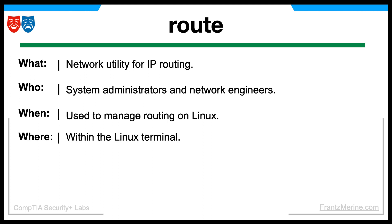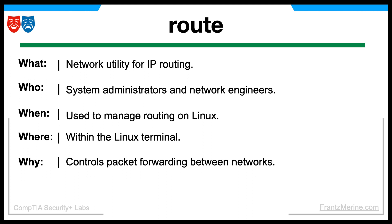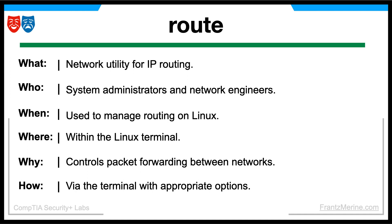The Route command is executed within the Linux terminal or shell, and its effects are applied to the local system's IP routing table. The command is used to manage the routing table, which is essential for determining the path that network packets take from their source to their destination. It helps in controlling the flow of network traffic and ensuring proper communication between devices on a network. To use the Route command, open a terminal in Linux and type Route, followed by specific options and arguments to perform various tasks, such as displaying the current routing table. The rest of the how is what this video is all about, so let's get into it.